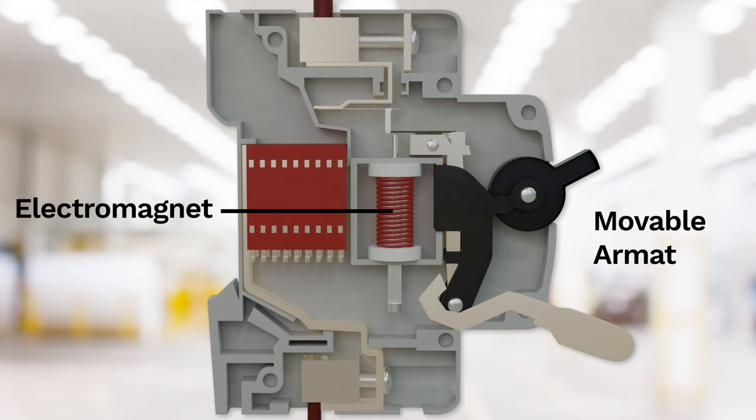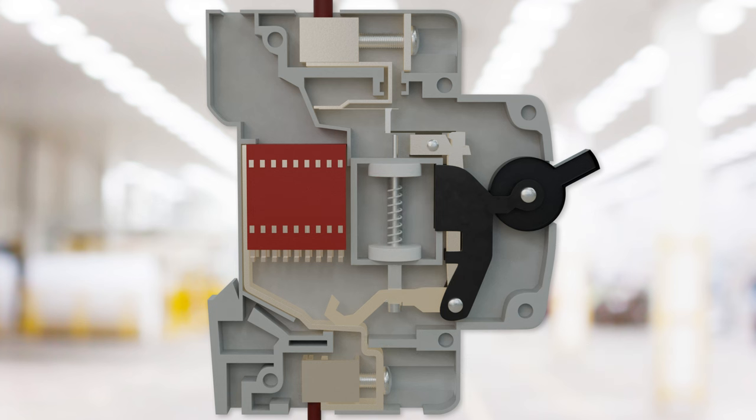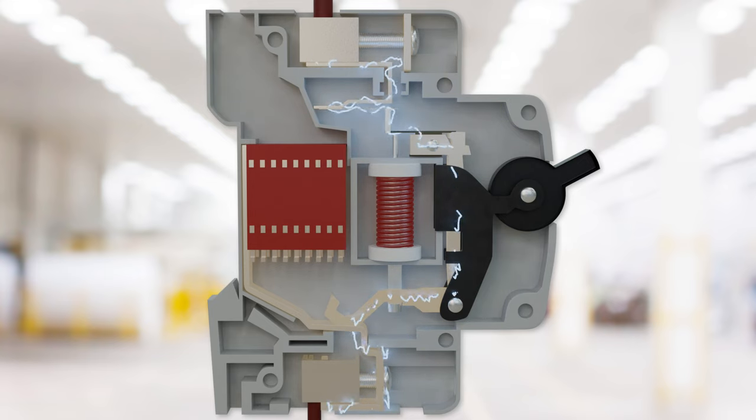The most common type of circuit breaker consists of an electromagnet and a movable armature with an electrical contactor at the end. The arm is connected to a spring or other actuator. The arm contactor makes contact with a stationary contactor inside the breaker, completing the circuit and allowing electricity to flow.